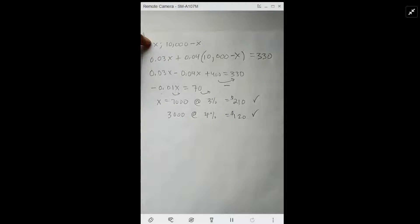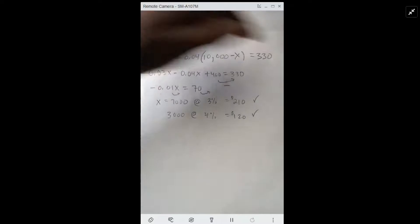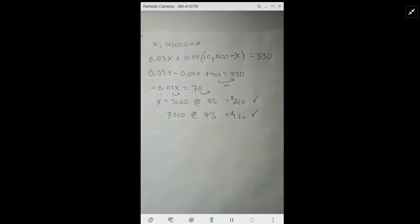Which is 10,000 minus x. So we set it up as: we have 0.03, which is 3% as a decimal, times x, and 0.04 times (10,000 minus x) equals 330. That's my equation after writing that out.